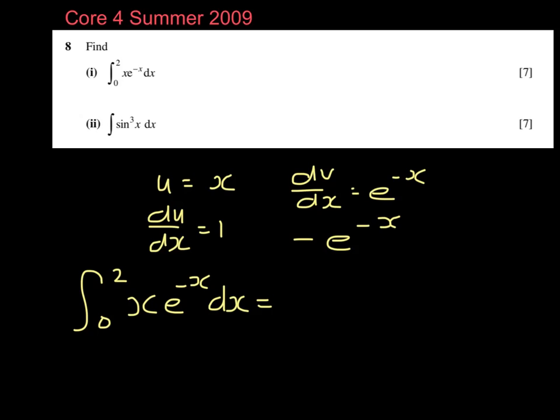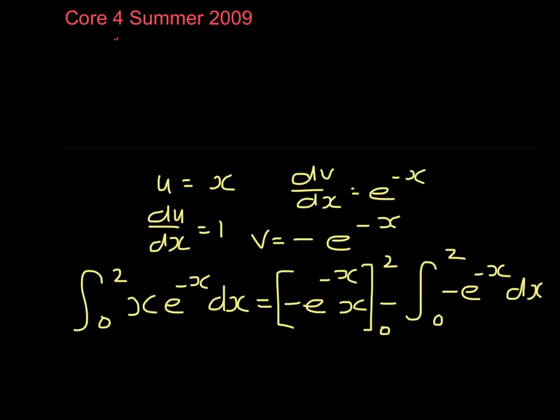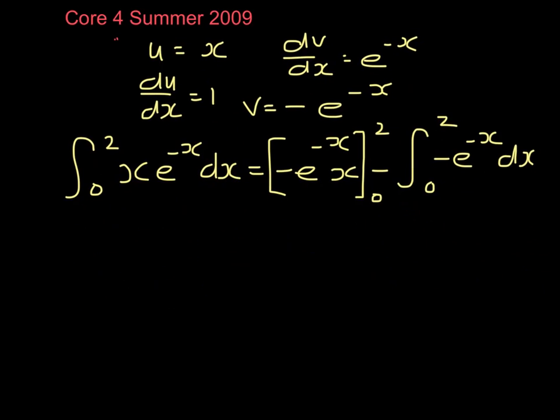So we have uv, so that is minus e to the minus x times x minus the integral from 0 to 2 of the du dx, so that's minus e to the minus x times 1 dx. Mustn't forget that because we have limits, we're going to put square brackets here and we're going to evaluate that integrand.